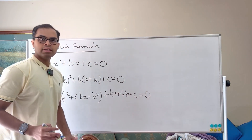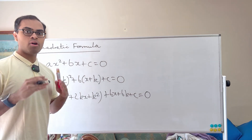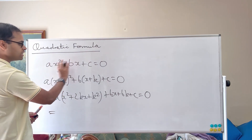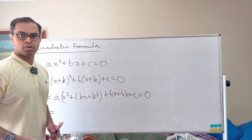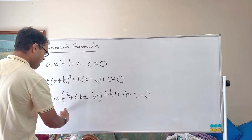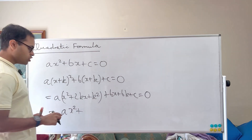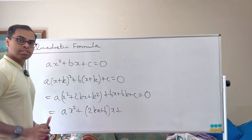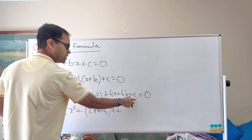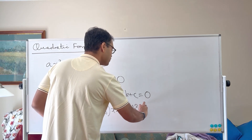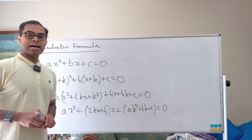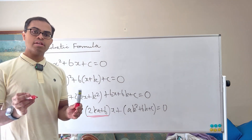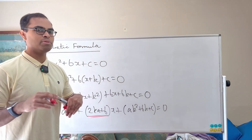That equals 0. Now let's collect like terms. We're going to turn this quadratic into what's called a depressed quadratic — we're going to get rid of the x coefficient. If the x term isn't here, this becomes easy to solve: it's just something squared equals something, take the square root and solve. So collecting like terms: ax², then the x terms give (2ka + b)x, and the constant terms give ak² + bk + c, all equal to 0. We want to choose k so that this coefficient of x is 0, making it a simple depressed quadratic.